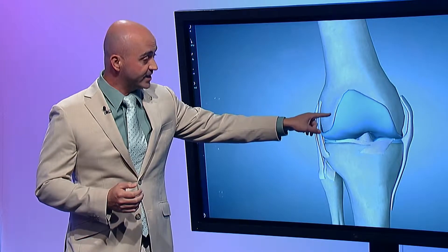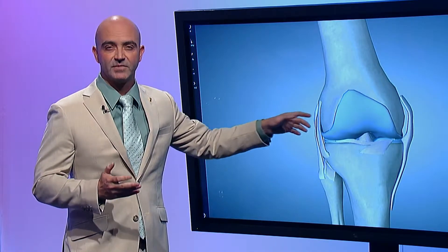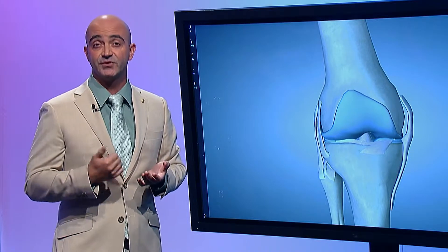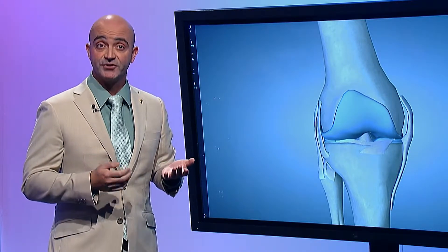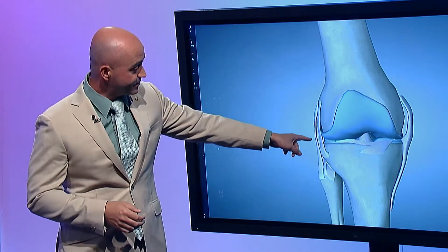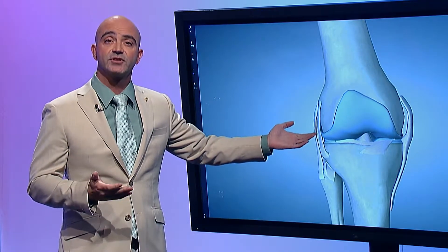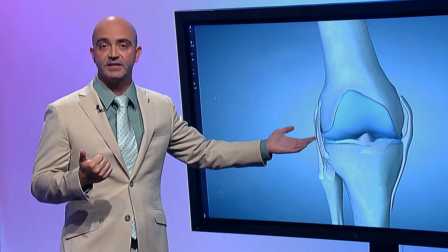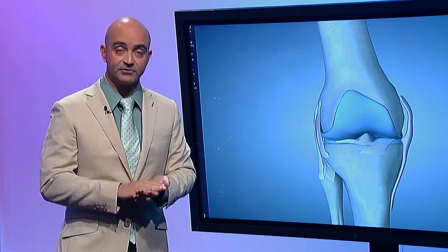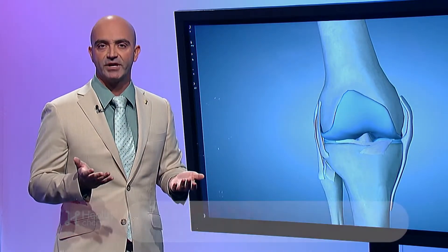You can also damage the cartilage through different traumatic events. If you dislocate your kneecap, that's one way you can hurt the cartilage. At the same time, these meniscus tears here on the outside are commonly injured, usually through twisting or pivoting activity, or also by deep squats.